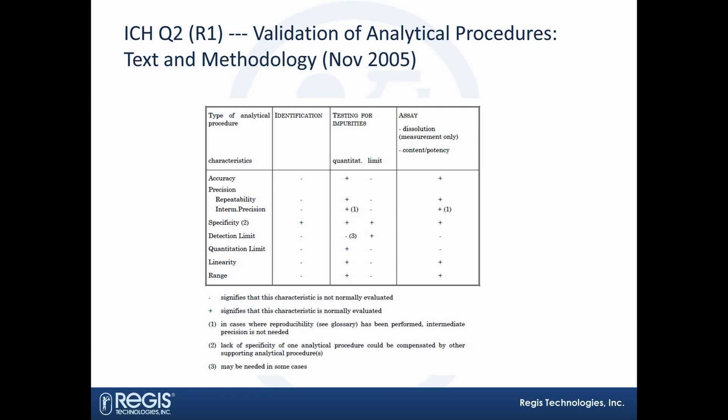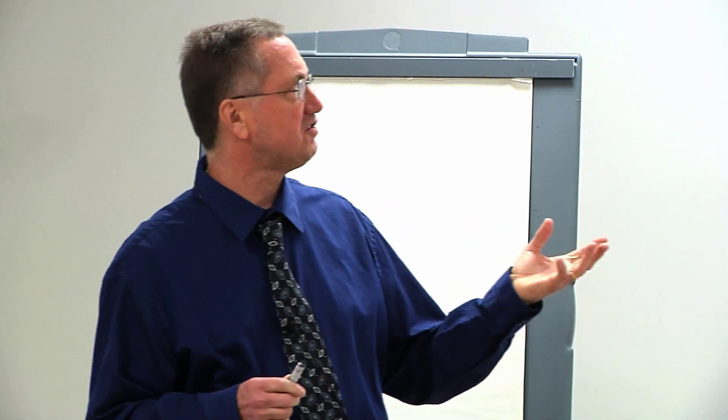This is not meant to be a vision test — it's just to help people know there are guidelines out there that tell you what attributes you need to validate for. As a couple of examples in this table: specificity is really only required when you're doing a validation of an ID test, which makes sense because you just want to know what you're looking for. In contrast with impurity assays, you want to make sure you include sensitivity. For assay tests, you may not need to include sensitivity, since you're only really looking at a parent component.